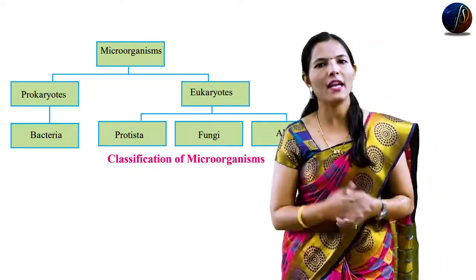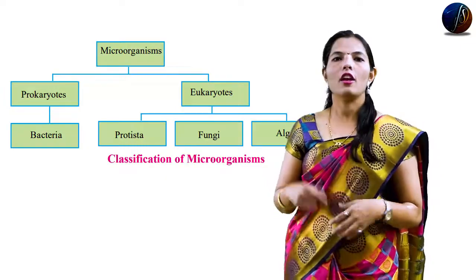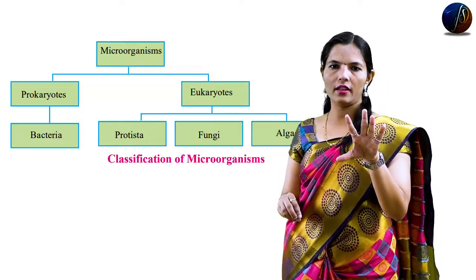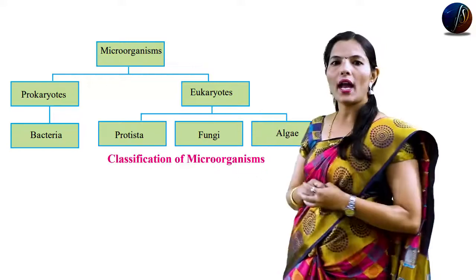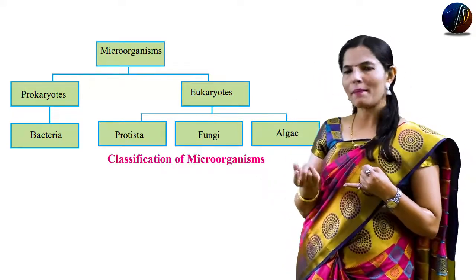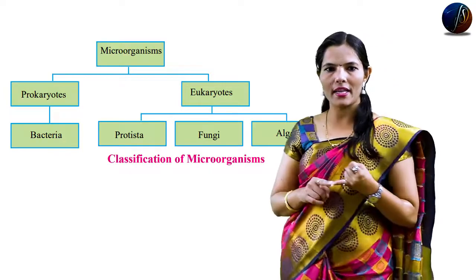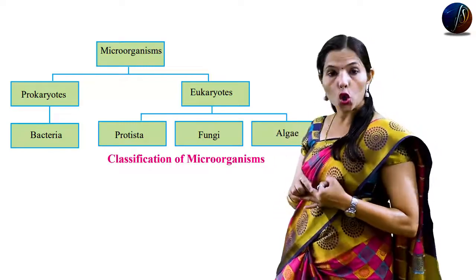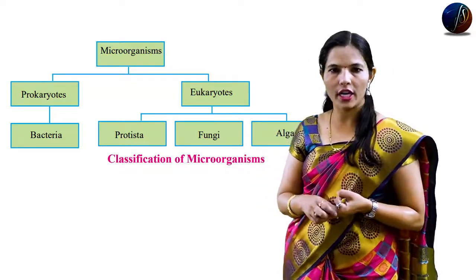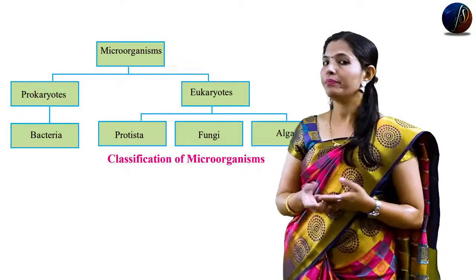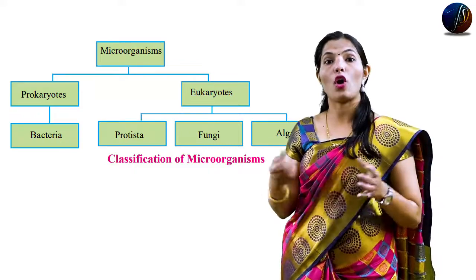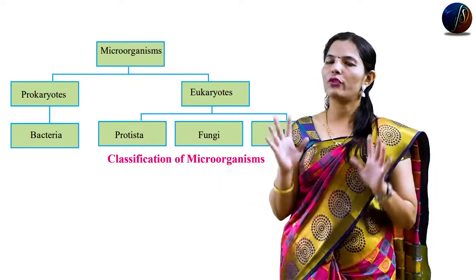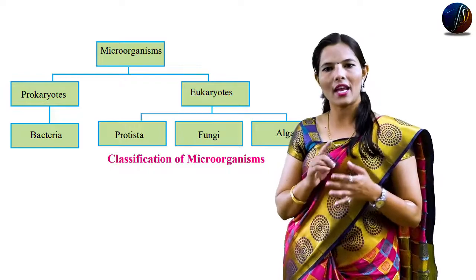According to their shape and life processes, microorganisms are divided into categories. The categories are: algae, fungi, protozoa — which includes amoeba, paramecium, etc. — bacteria, and viruses such as coronavirus and poliovirus. So microorganisms are divided into 5 categories: algae, fungi, protozoa, bacteria, and viruses. In 8th standard we study these categories in detail.